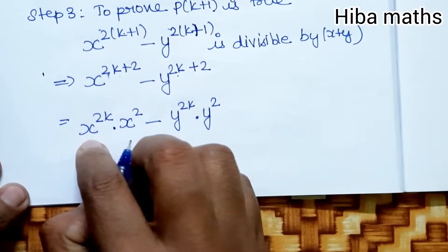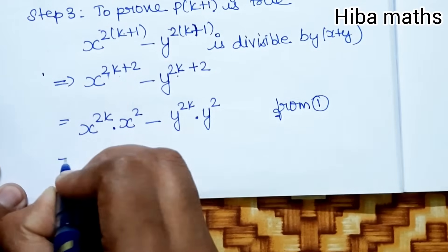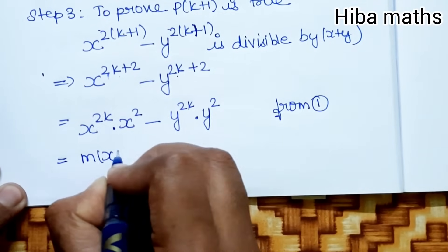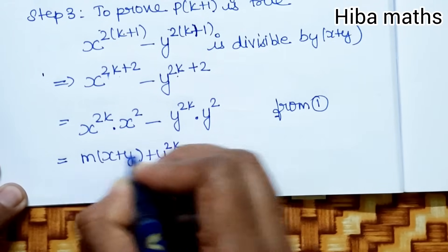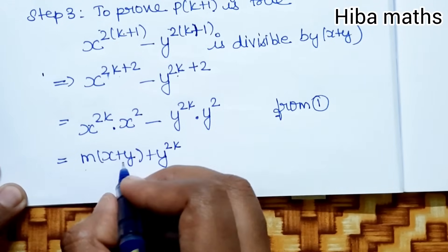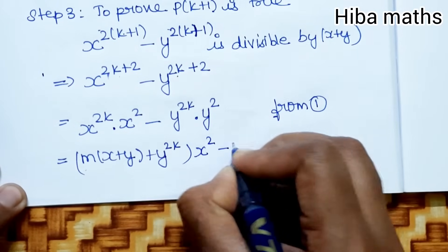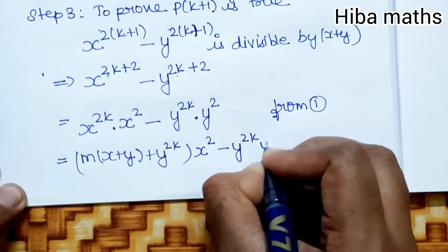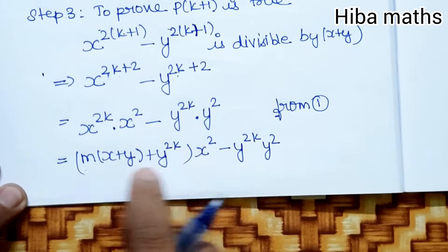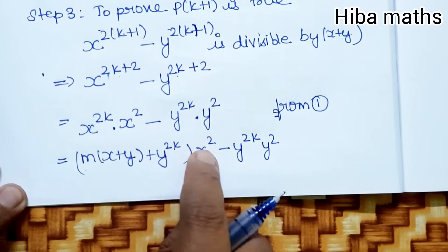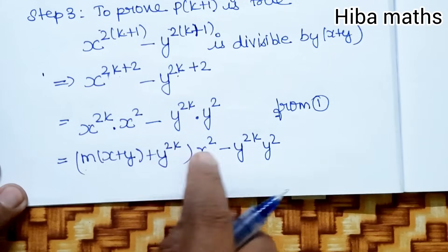Substituting x^(2k) from the inductive hypothesis as M(x+y) + y^(2k), we get: [M(x+y) + y^(2k)] × x² minus y^(2k) × y². Multiplying through by x², this gives M(x+y)x² plus y^(2k) × x² minus y^(2k) × y².